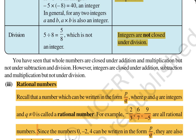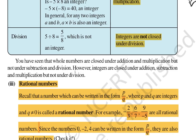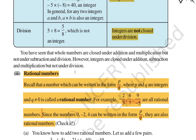Now, a rational number is defined as any number which can be written in the form p by q, where p and q are integers and q is not equal to 0. For example, minus 2 by 3, 6 by 7, and 9 by minus 5 are all rational numbers. Since numbers like 0, minus 2, and 4 can also be written in the form p by q, they are also rational numbers.